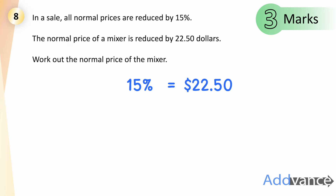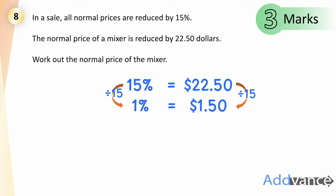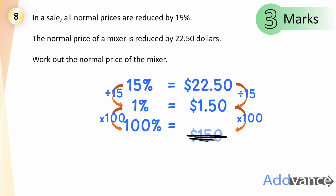Question eight. In a sale, all prices are reduced by 15%. The mixer is reduced by $22.50. So 15% equals $22.50. Divide by 15 to find 1% equals $1.50. Multiply by 100 to find the normal price: $150. That is the final answer for 3 marks.